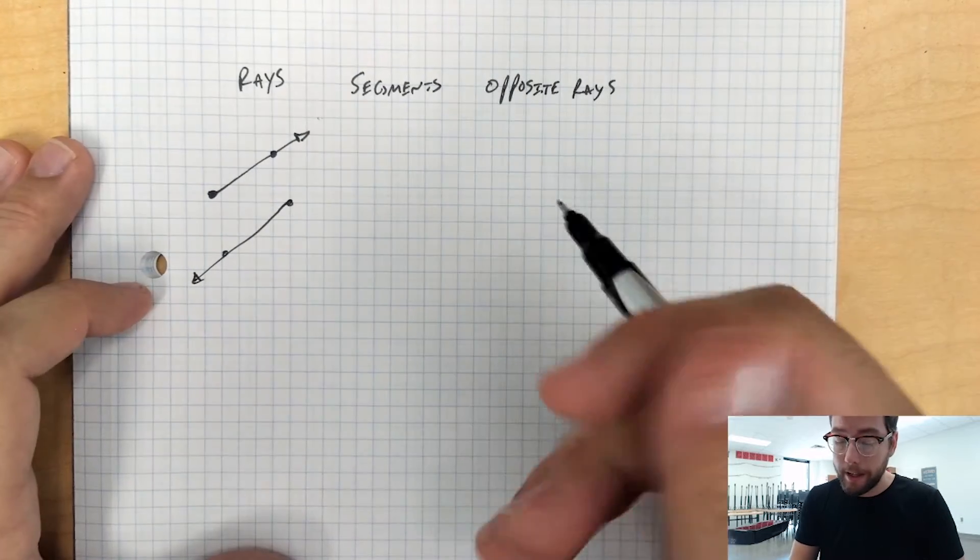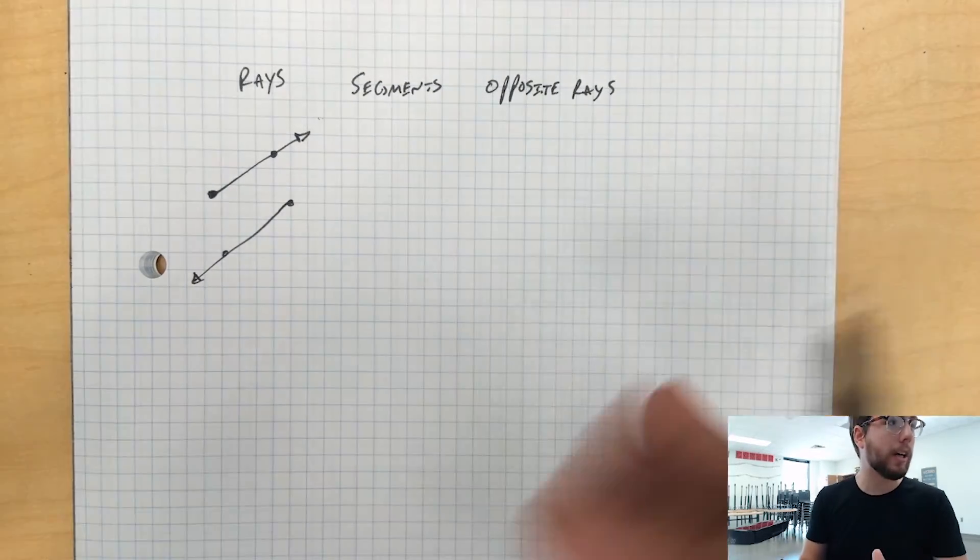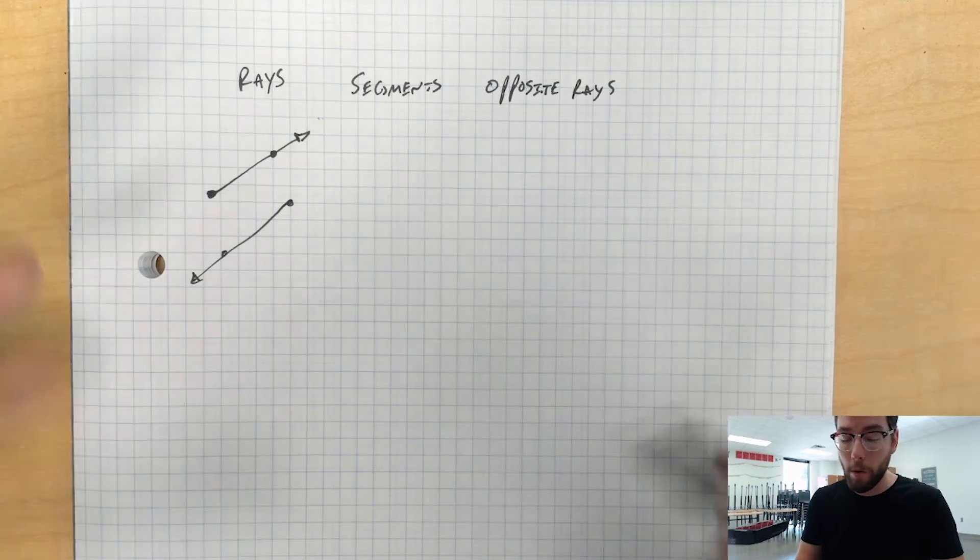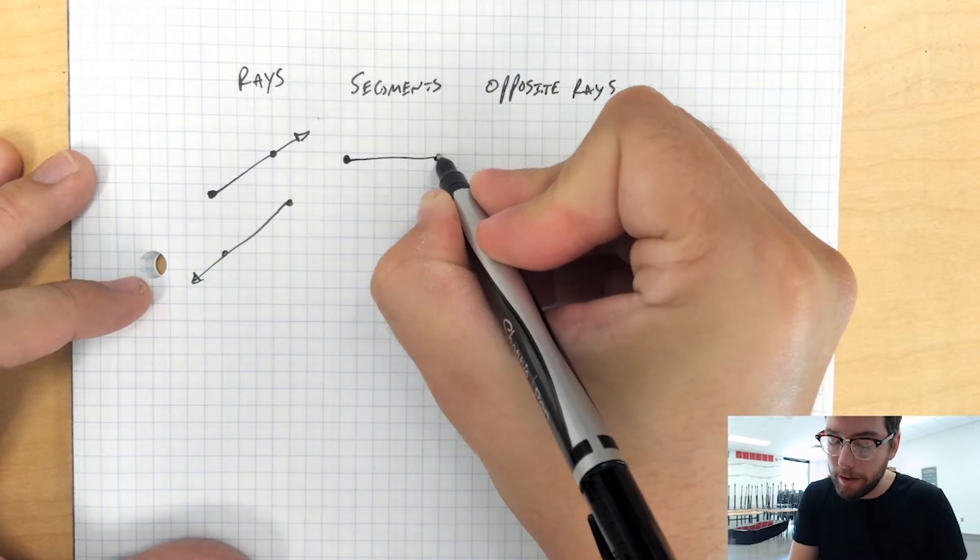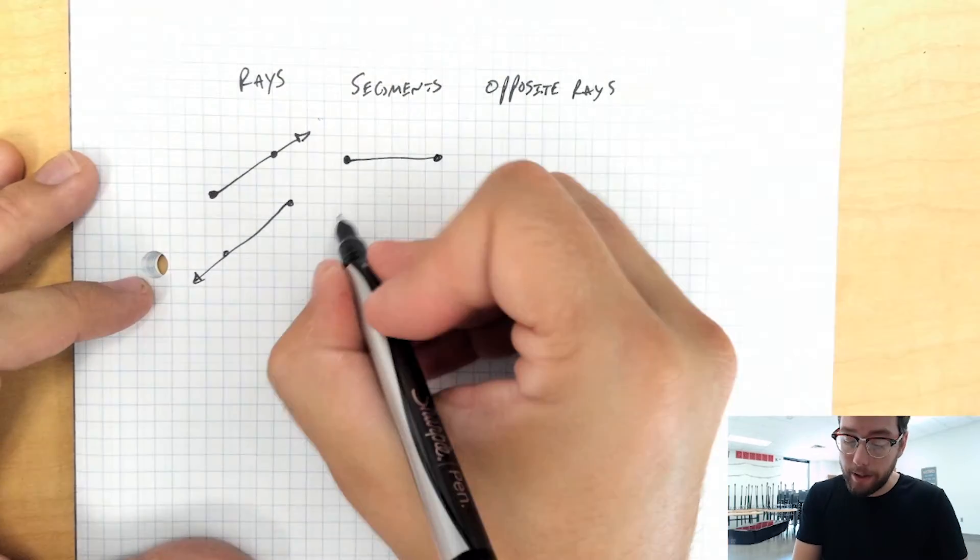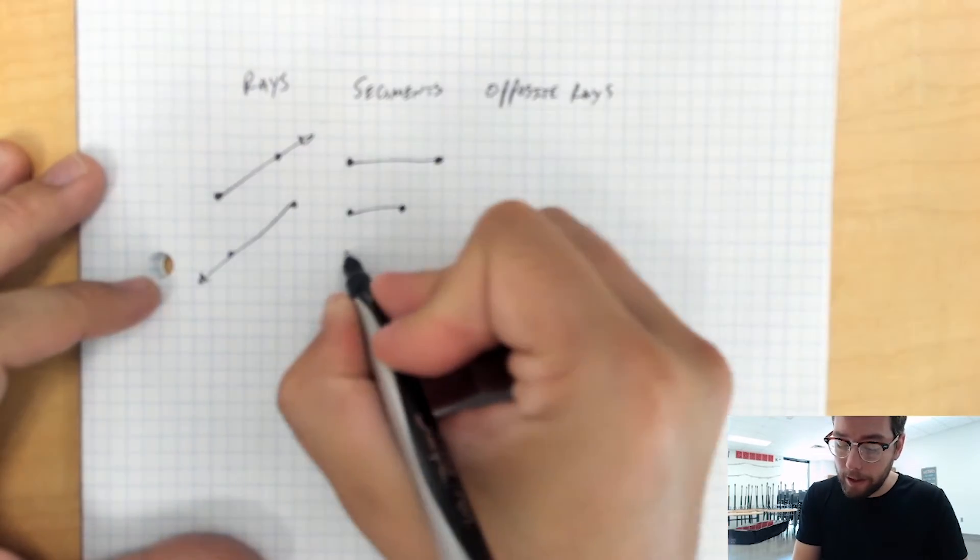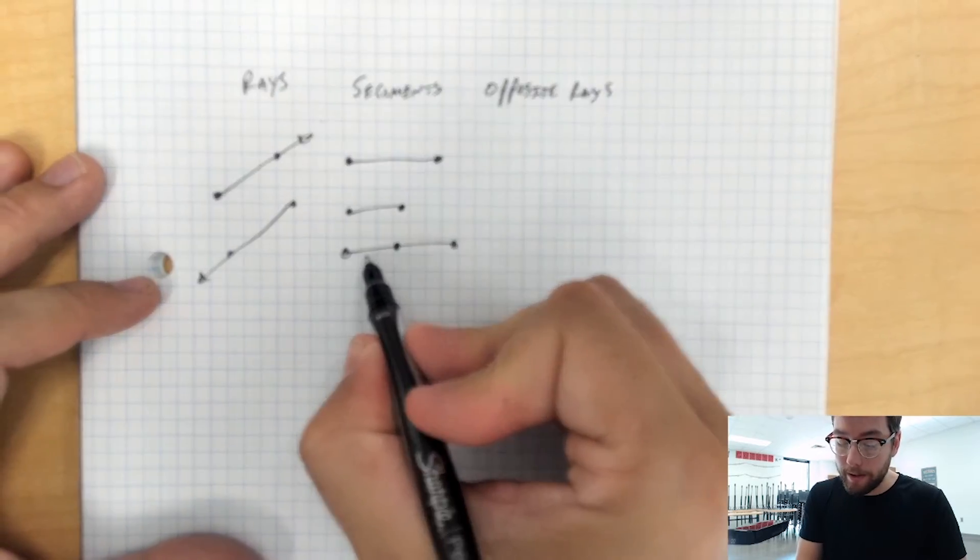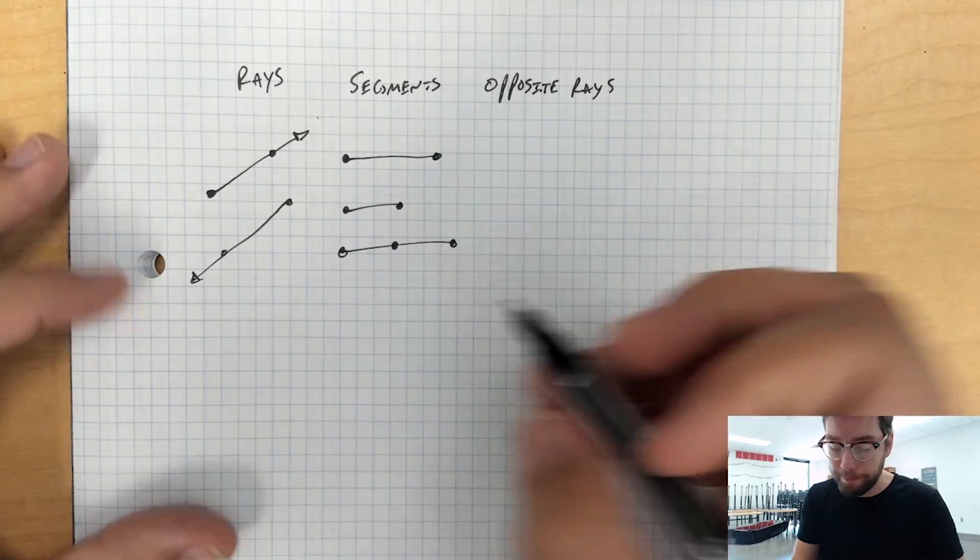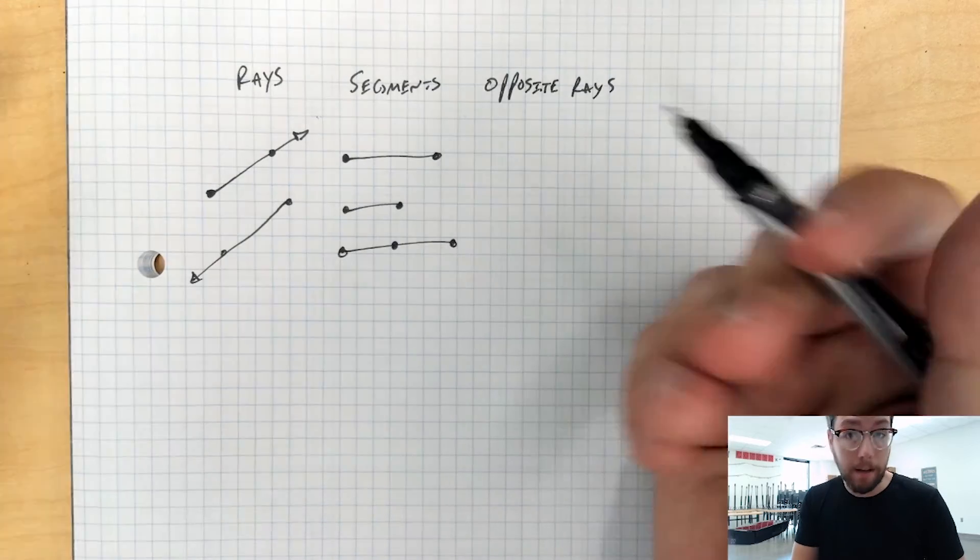A segment is pretty much just a part of a line and all of the points that are included in between that. So it's going to be an endpoint and another endpoint. It can be small, it can be long, and you can have an endpoint in the middle. So this is a segment and this is a segment, but all of it is a segment as well.